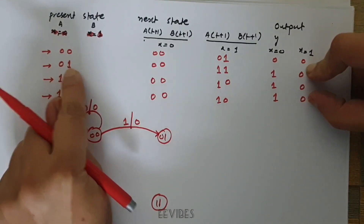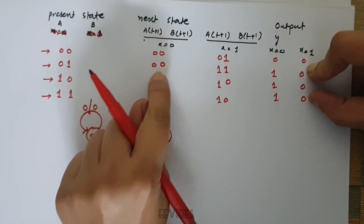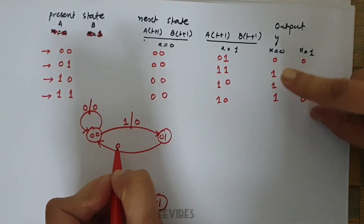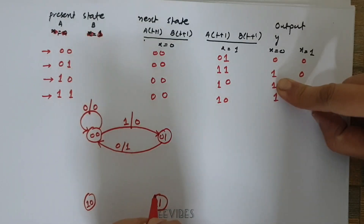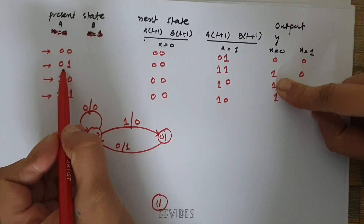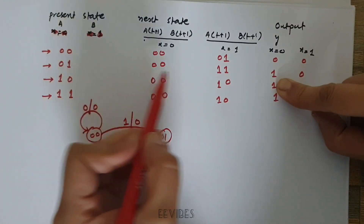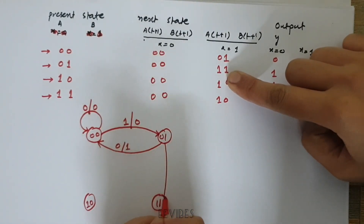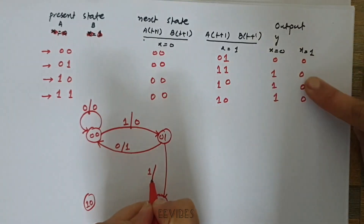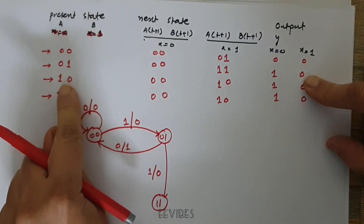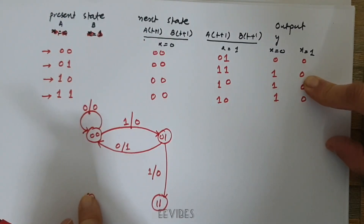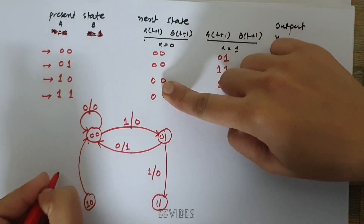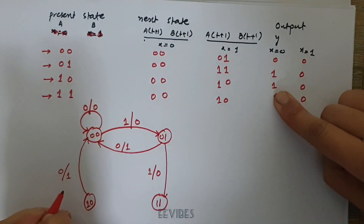Moving to the next state — being in the 0 1 state when input x is equal to 0, the next state is 0 0, so it goes back to that state. At that moment the output is equal to 1. Similarly, when you are in the 0 1 state and input x is equal to 1, you move to the 1 1 state with output equal to 0. When in the 1 0 state and input is equal to 0, you go back to the 0 0 state and the output is equal to 1.